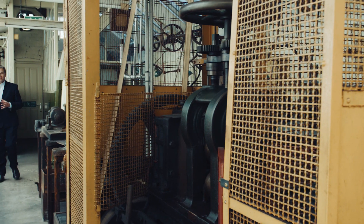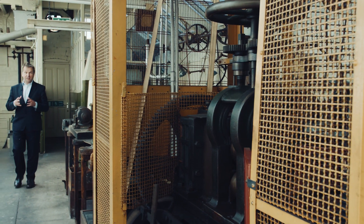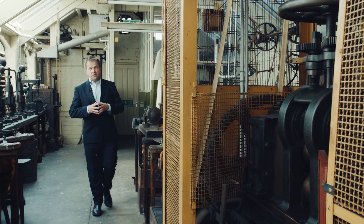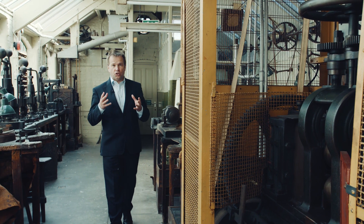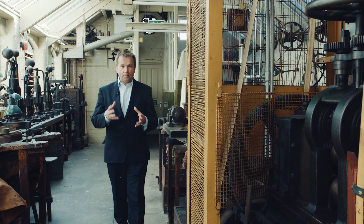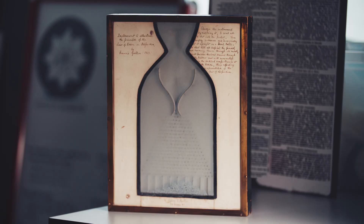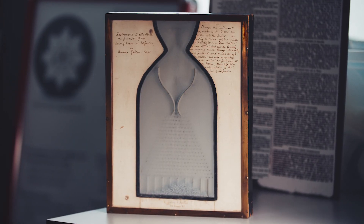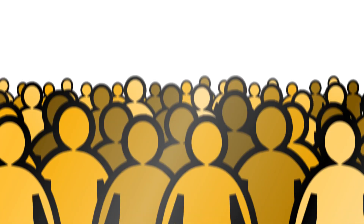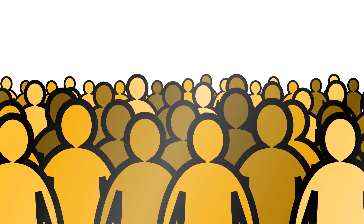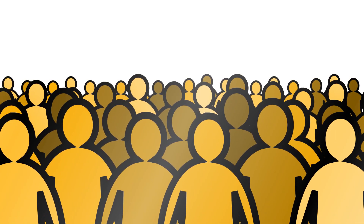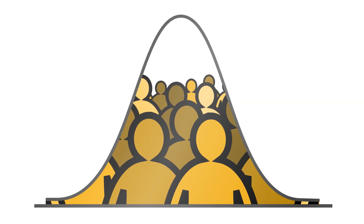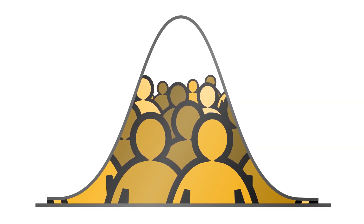It was in 1876, in a Victorian workshop rather like this one, that Sir Francis Galton constructed a contraption called the Galton Board. Galton wanted to demonstrate why the heights of different people, a seemingly random characteristic, actually vary within a population in a very recognisable, orderly way.